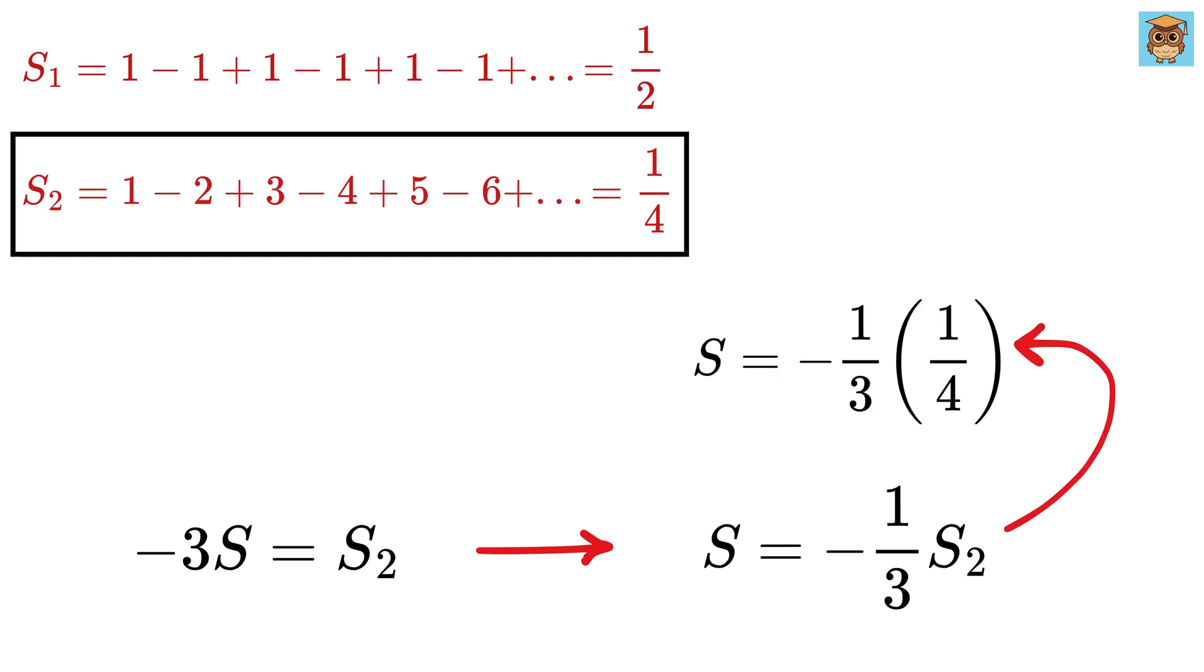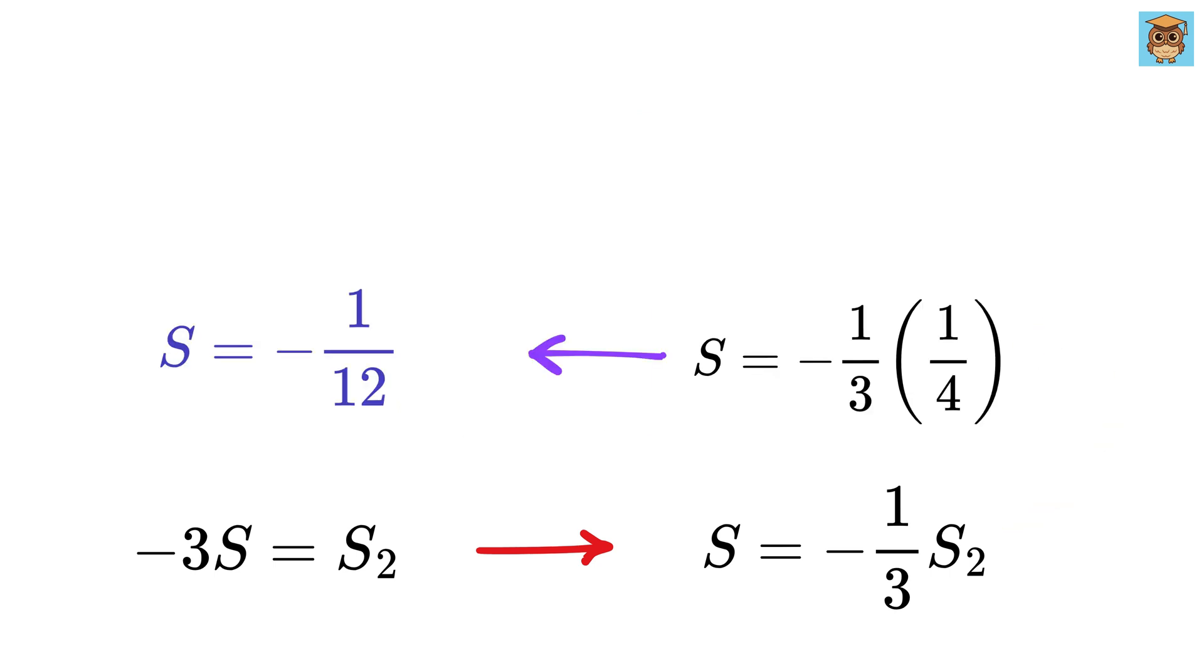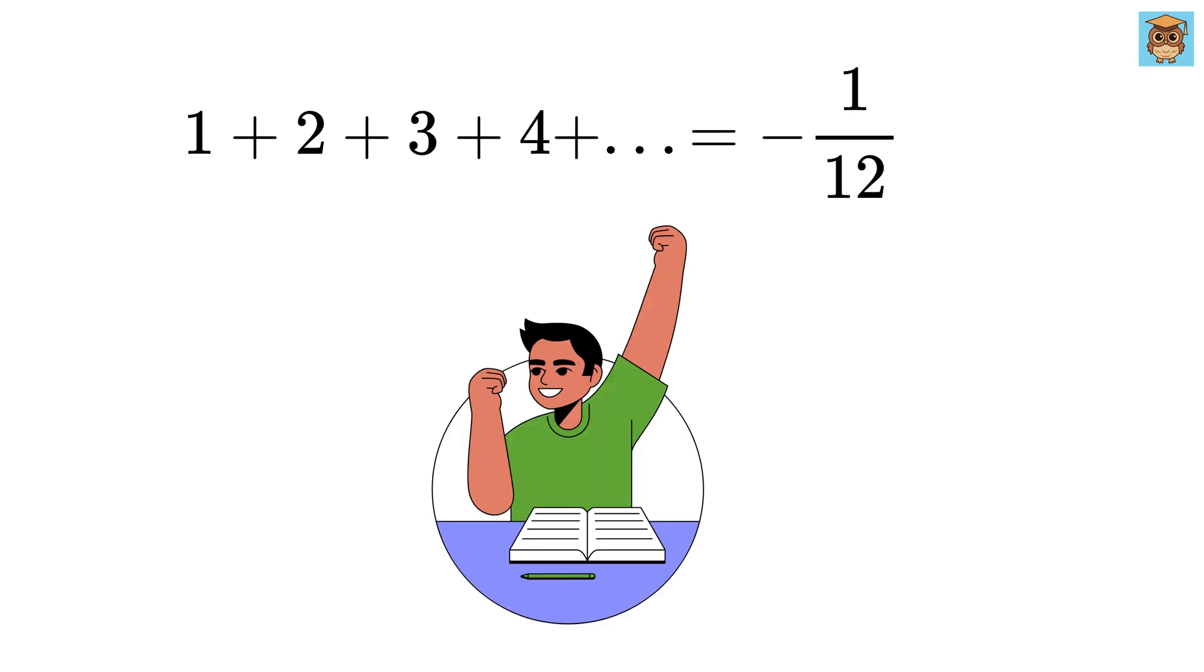Put S2 equals 1 over 4 here to get S equals this, which is none other than minus 1 over 12, and there you have it. I have simply proved to you that the sum of all natural numbers equals minus 1 over 12. Isn't this super cool?